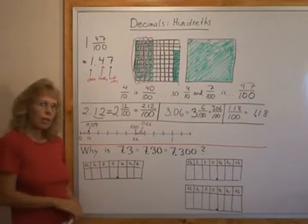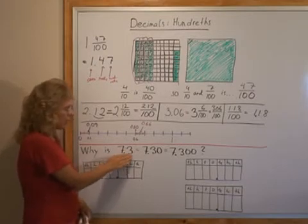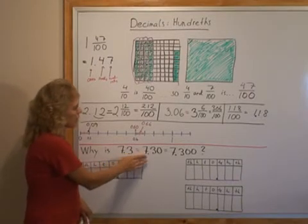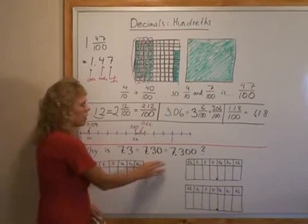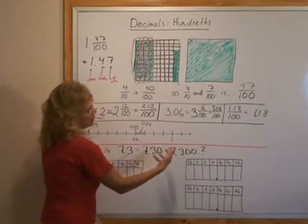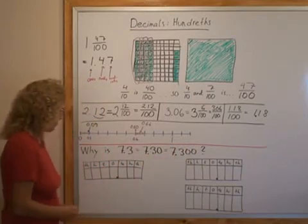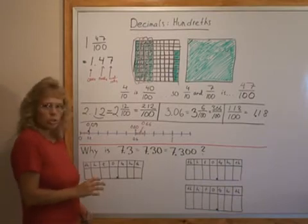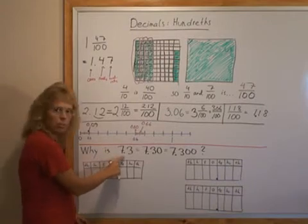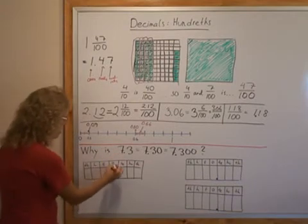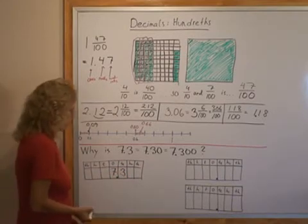Lastly, I wanted to talk about why 7.3 or 7 and 3 tenths is the same as 7.30, or 7 and 30 hundredths, or the same as 7 and 300 thousandths. Sometimes children are confused with this. We can use a little place value chart to show why this is so. I'll first write 7.3 in the chart. There's 7 ones here and 3 tenths, like that.